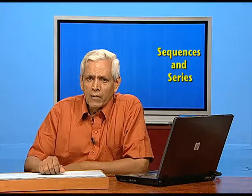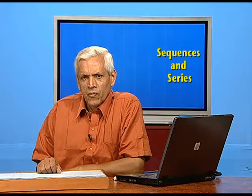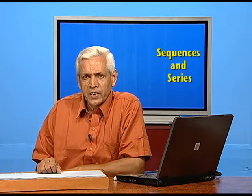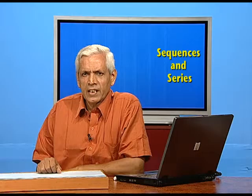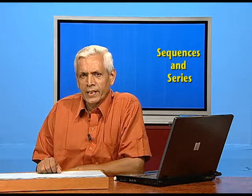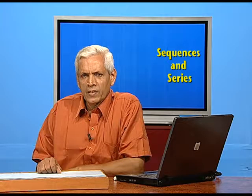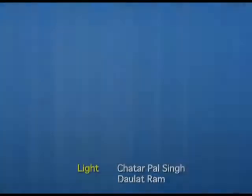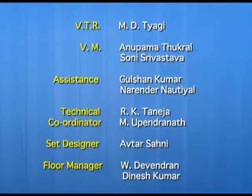Today I have introduced you to the concept of sequence. We also discussed, in specific, what is known as arithmetic progression — in short, AP. We proved the formula for the general term: Tₙ = a + (n−1)d. We also worked out the formula for the sum of first n terms: Sₙ = n/2 · (2a + (n−1)d). With the help of these two formulae we can solve almost any problem of an AP. Thank you very much.